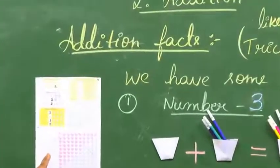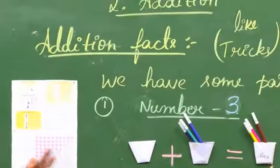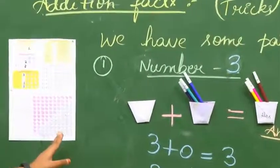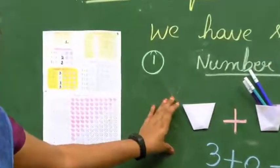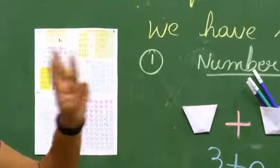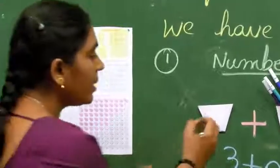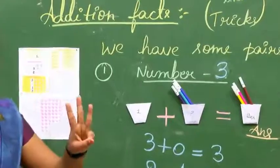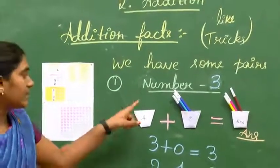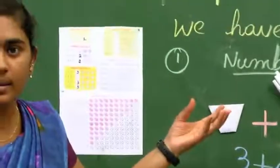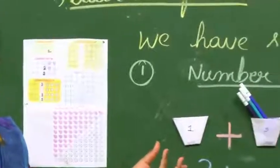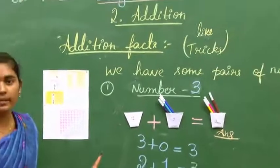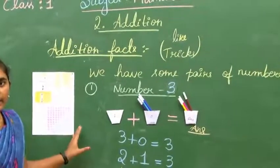We still have number 4, 5, 6, 7, 8, 9, and 10 to do. You can also make the same activity at home — take 3 cups, cup 1, cup 2, and cup 3. Take some sketch pens or chocolates, shift them from one cup to another, and write the answers. This is the activity for today. Complete it.